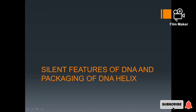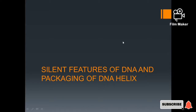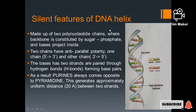Hello viewers, now we are going to discuss the next topic of the molecular basis of inheritance: the salient features of DNA and the packaging of DNA helix. The salient features of DNA helix are that it is made up of two polynucleotide chains, where the backbone is constituted by sugar and phosphate.